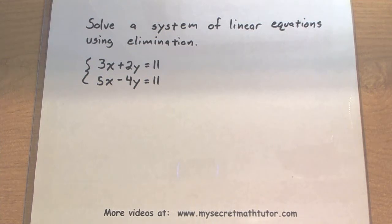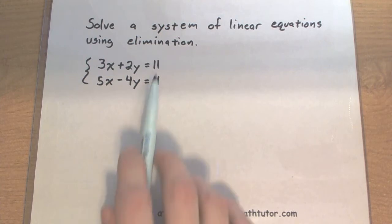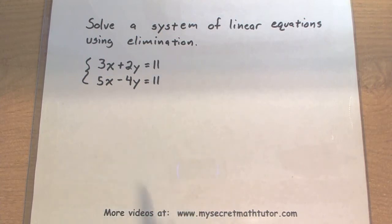Now the idea is that we want to add these two equations together and eliminate one of our variables. Now if we were to just add them as they are, nothing really gets eliminated. 3 plus 5 gives us 8x, 2 minus 4 gives us negative 2y, 11 plus 11 is 22, so nothing is eliminated.